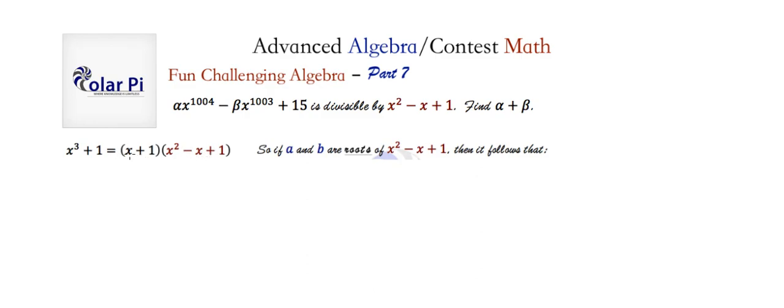It doesn't matter what happens with the a plus 1. When we plug in a, this part will be 0, and likewise when we plug in b, this part will be 0. So we conclude, then, that a cubed plus 1 is equal to 0, and b cubed plus 1 is equal to 0.